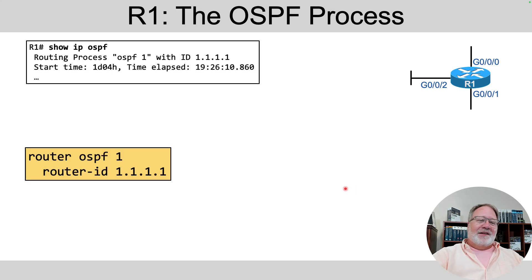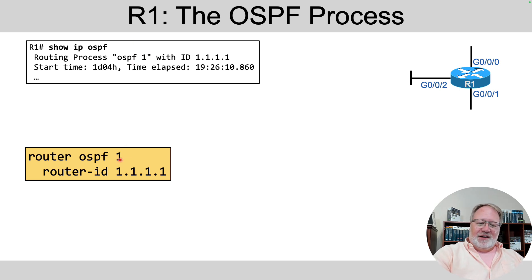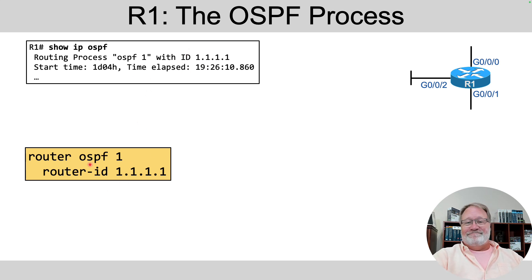The show IP OSPF command lists the OSPF process ID that you configured in your router OSPF 1 command, and it also lists the router ID if you want to verify that.